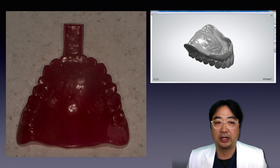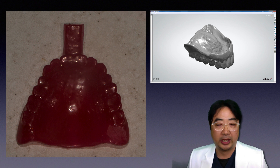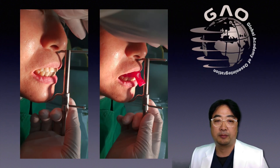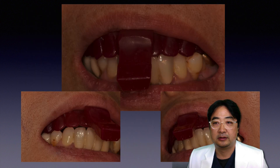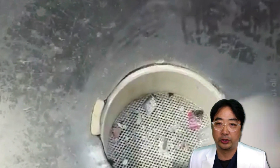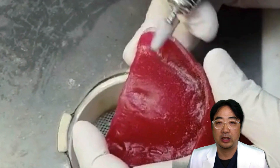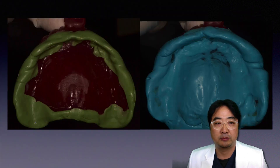I sent the data to the lab, and my lab technician printed the denture with a handle. Then I tried it in the patient's mouth, and I tried to keep the VDO that the existing denture had. I checked the occlusion again, then reduced the denture border 1.5 to 2 mm gradually.